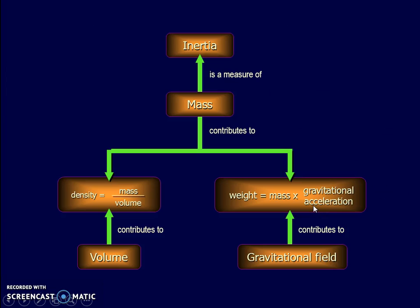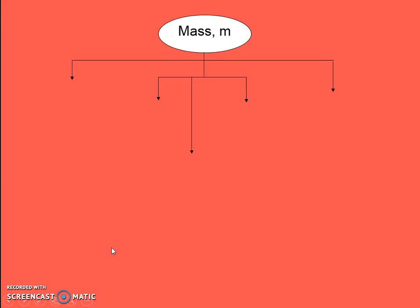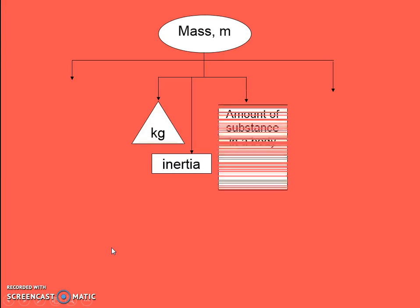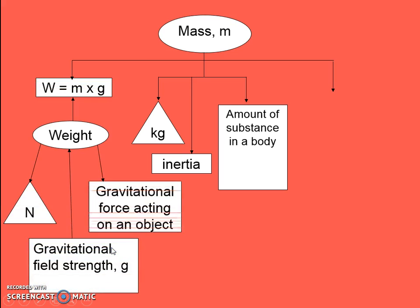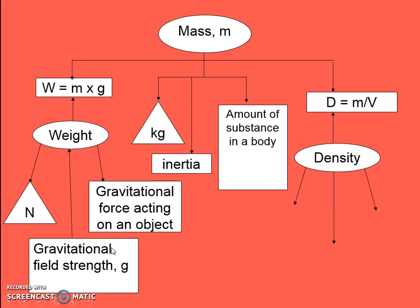In summary, we have learned about mass, weight, inertia, and density. This is the last mind map, giving a quick overview of what is covered in Chapter 4. Please complete your workbook exercises on Chapter 4: Mass, Weight, and Density. Thank you.